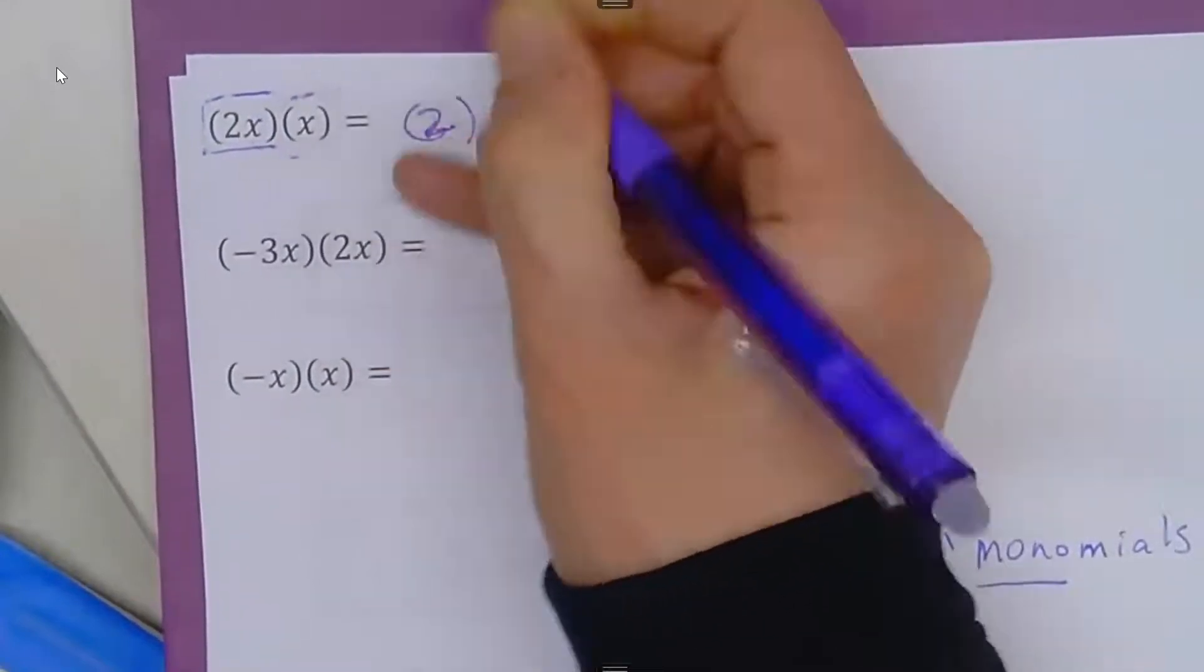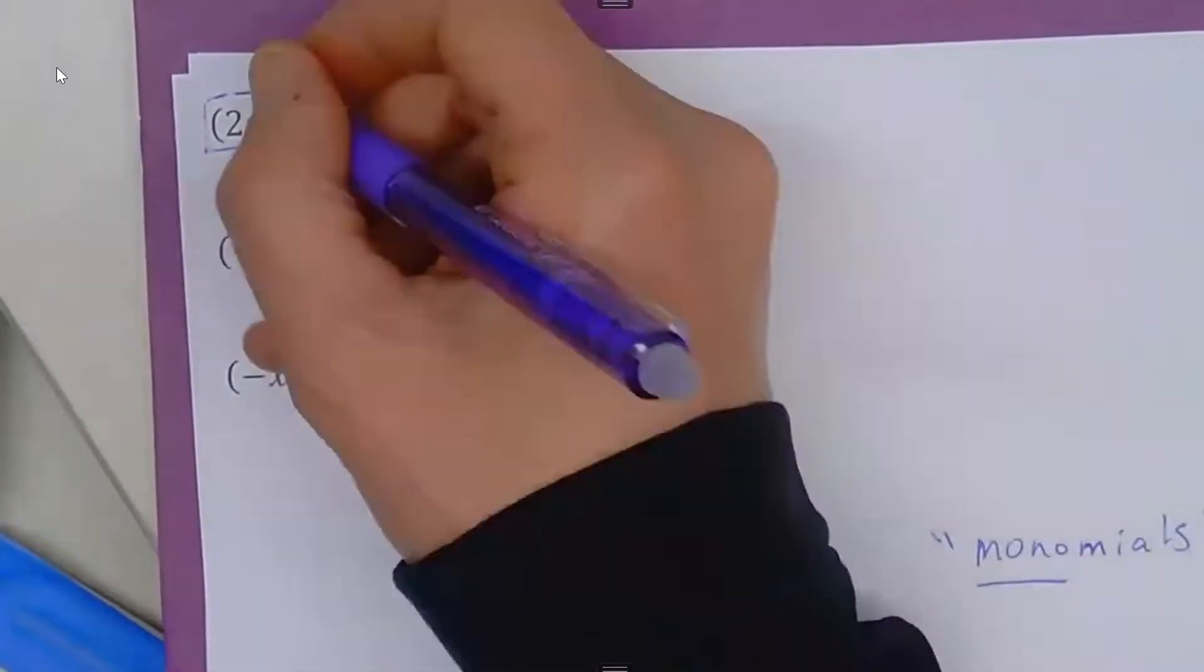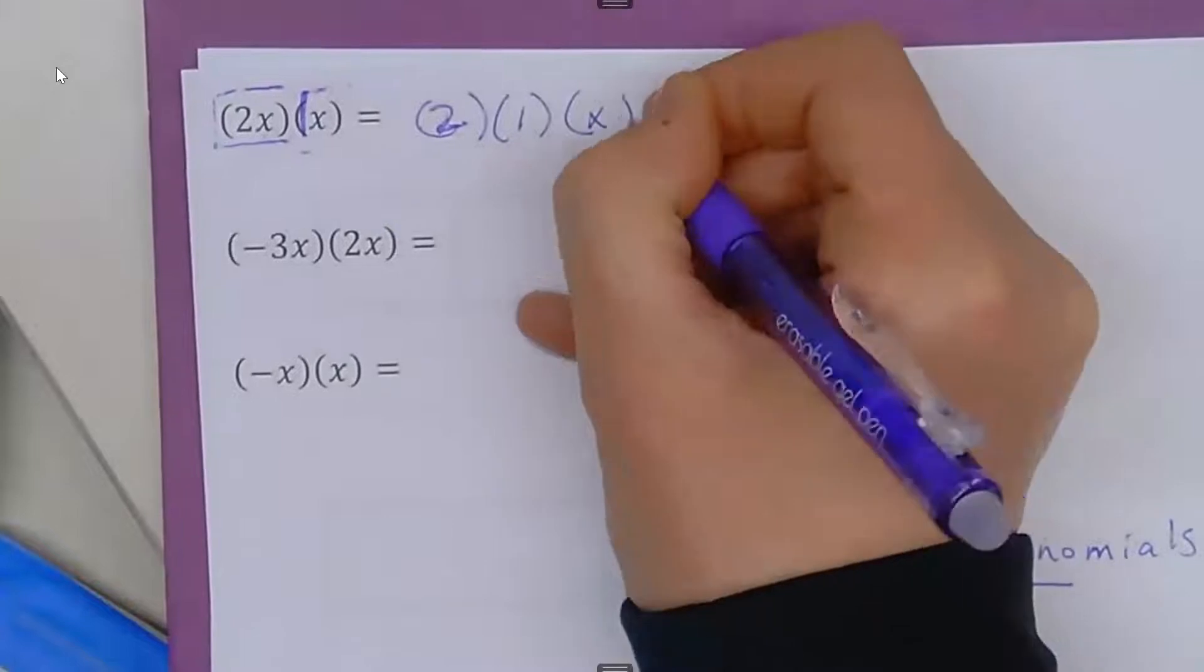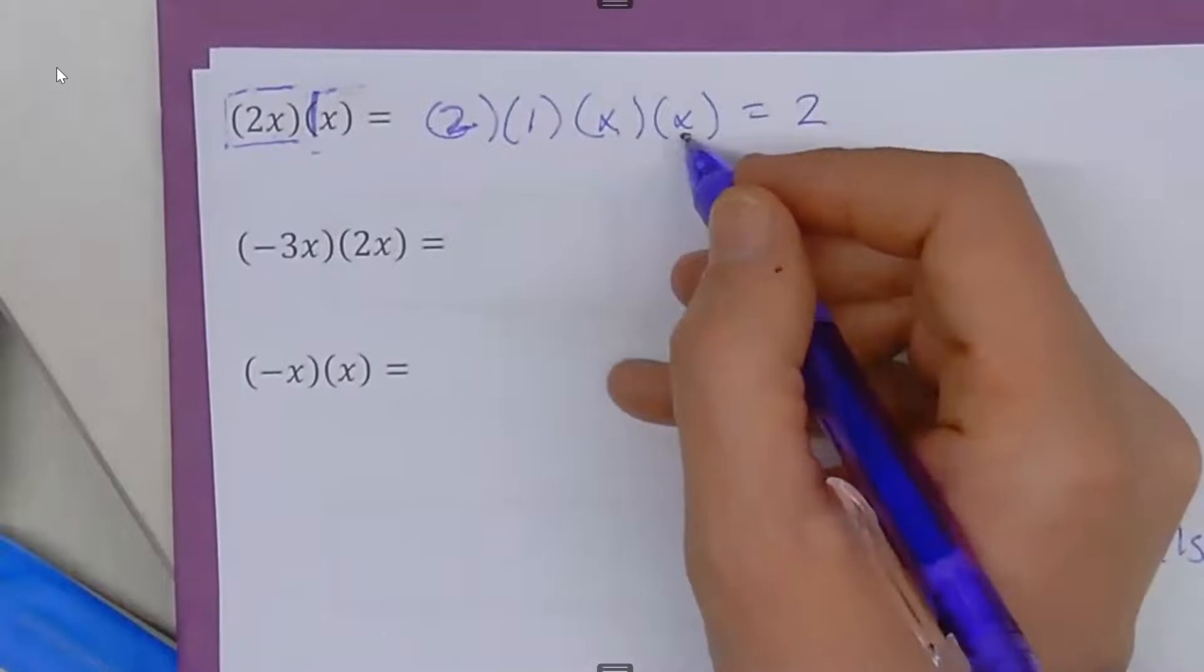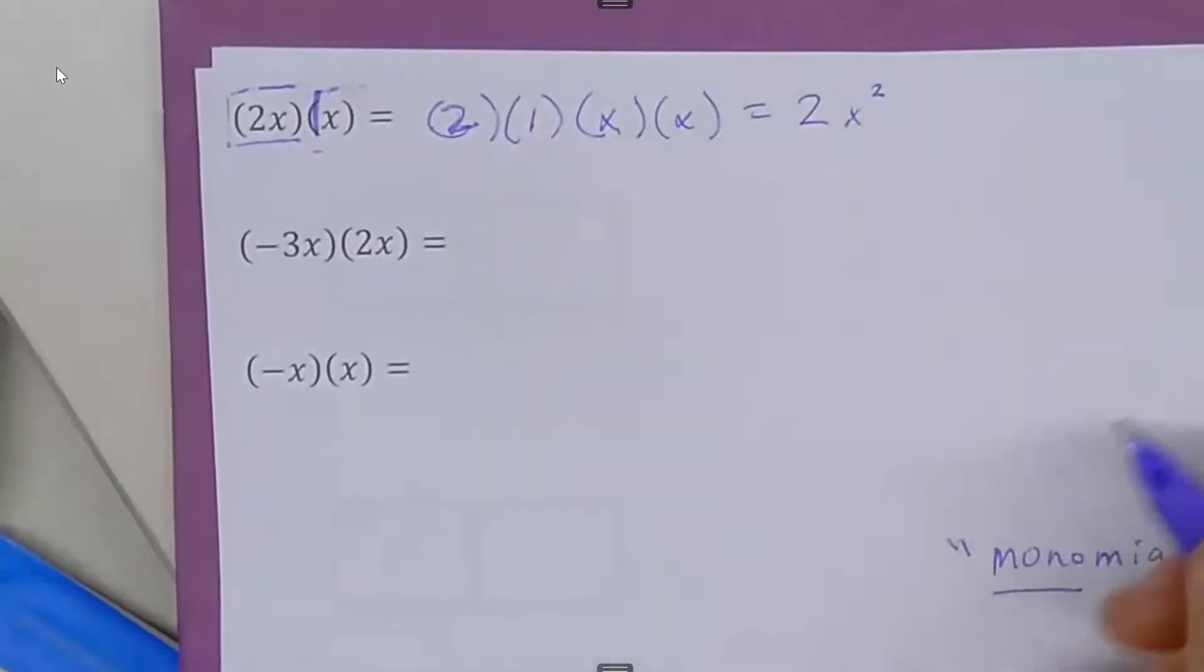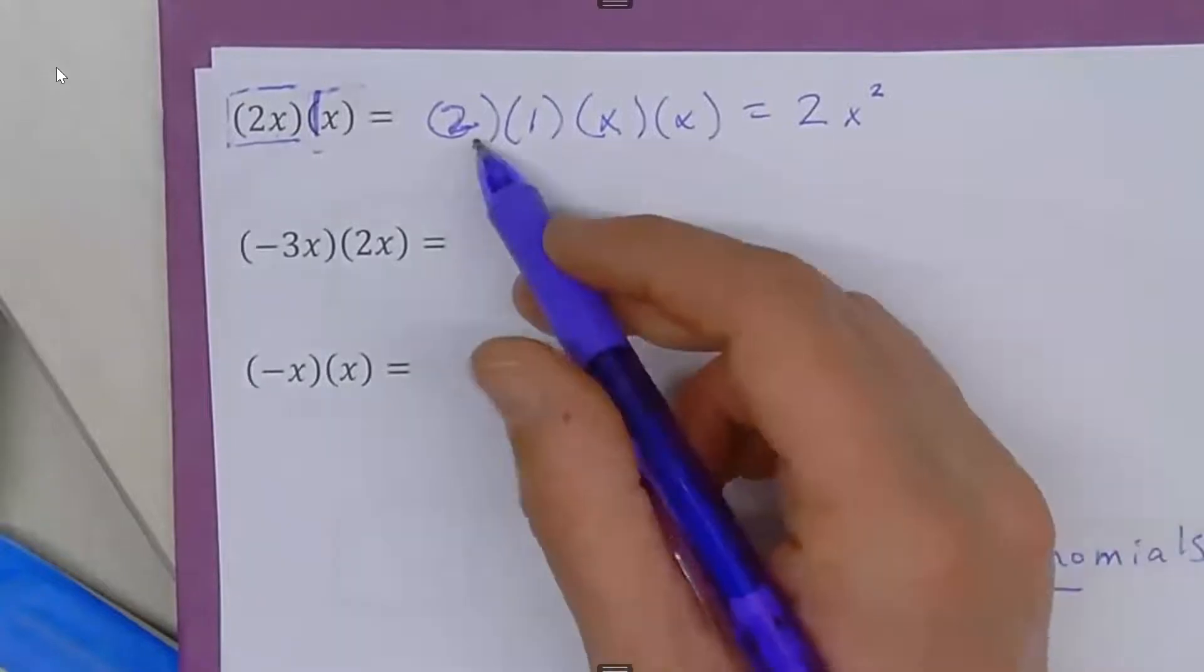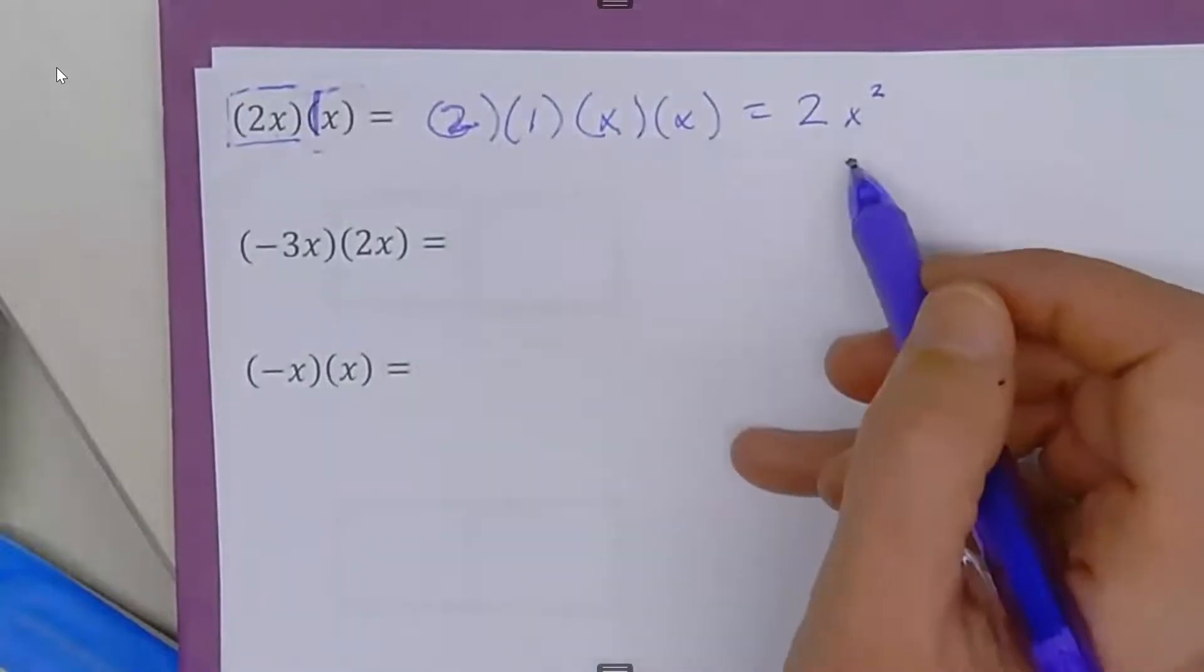This is 2 multiplied by—there's a 1 in front of naked x. A naked x is really 1x, so that's 2 times 1, and now the variables: x times x. 2 times 1 is 2. x times x is x to the second power, or x squared. The reason we have the exponent of 2 is because we multiplied the x's a total of 2 times.